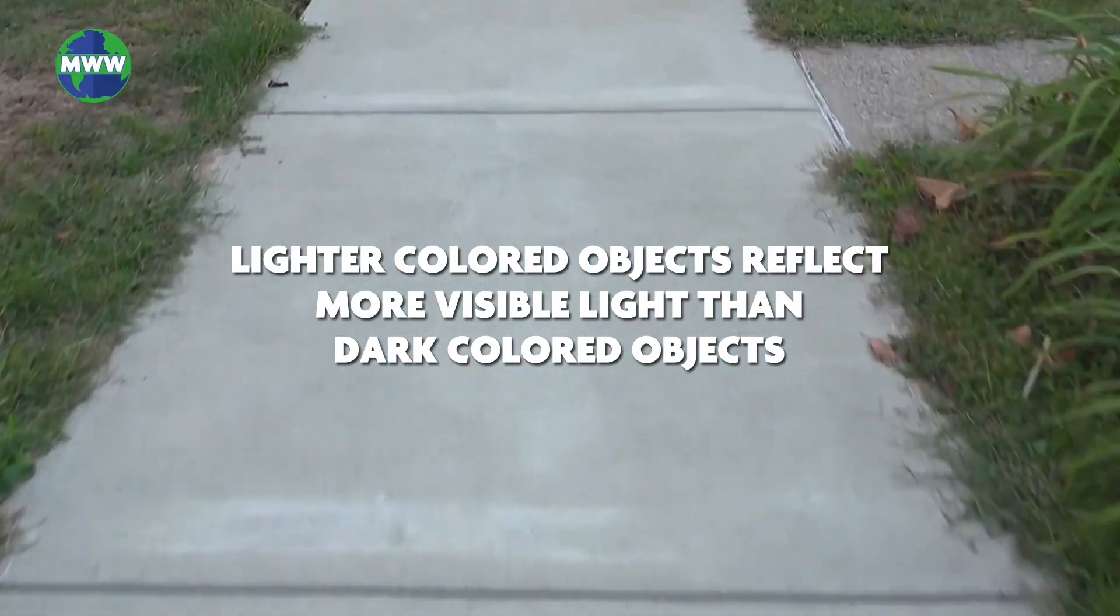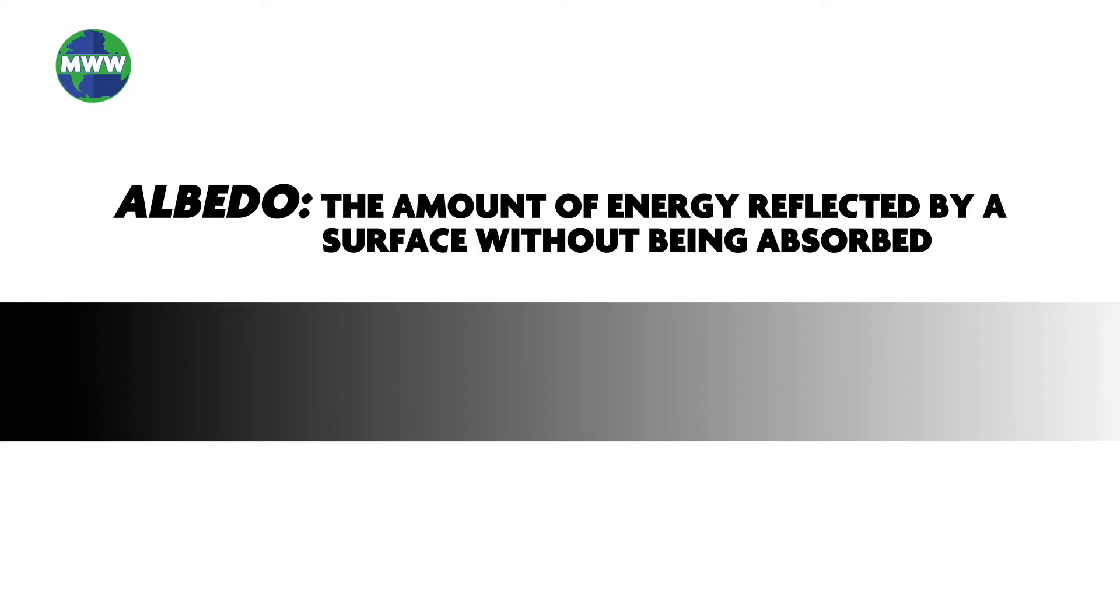This is called albedo, or the amount of energy reflected by a surface without being absorbed. Therefore, dark surfaces have a low albedo compared to lighter colored surfaces. Albedo is measured from 0 to 1, or sometimes as a percentage.